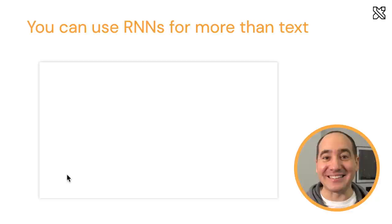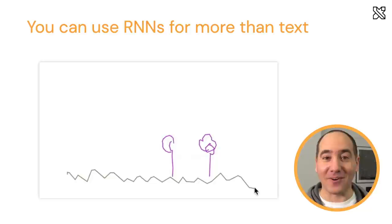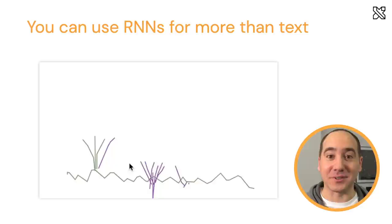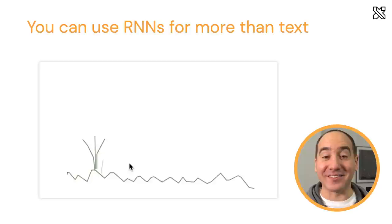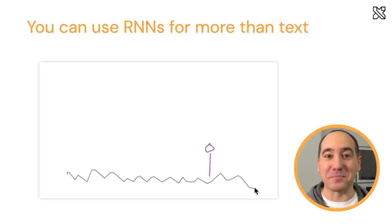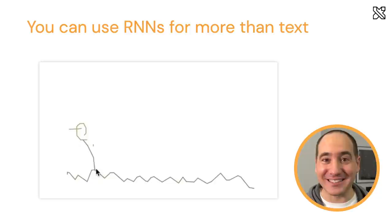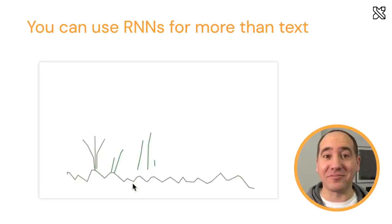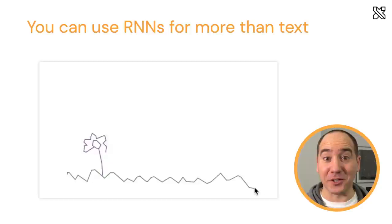One amazing and fun example of RNNs is drawing generation. A drawing is a sequence of brushstrokes — a sequence of vectors. An RNN has been trained on a database of drawings to produce sketches similar to what it's seen before, so you can begin drawing something like a truck or a plane and the RNN will attempt to autocomplete your drawing. It could help artists who get creative block find inspiration.